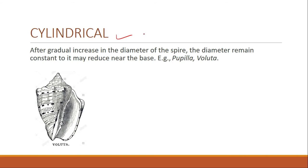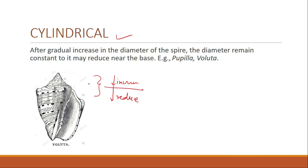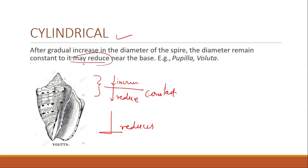The next important shell form is cylindrical. In cylindrical shell form, after a gradual increase in the diameter of the spire, the diameter remains constant and may reduce near the base. In the spire, the diameter first increases, then remains constant, and near the base it reduces or may remain constant. The example is Voluta.